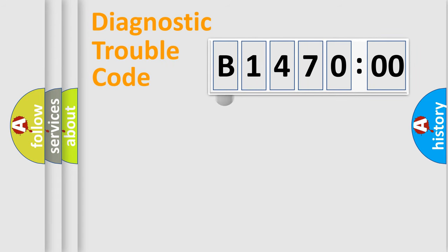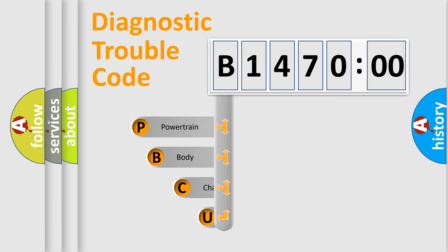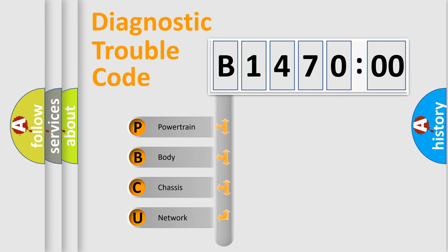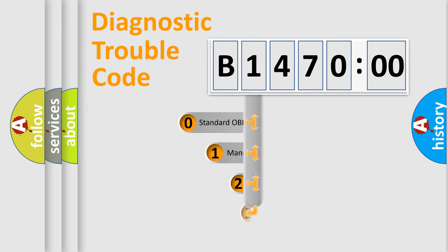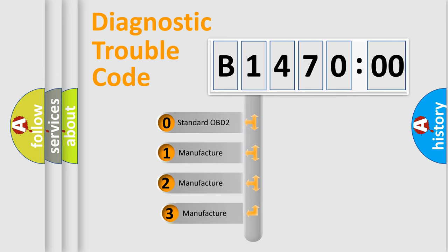Let's look at the history of diagnostic fault code composition according to the OBD2 protocol, which is unified for all automakers since 2000. We divide the electric system of the automobile into four basic units: Powertrain, Body, Chassis, and Network. This distribution is defined in the first character of the code.